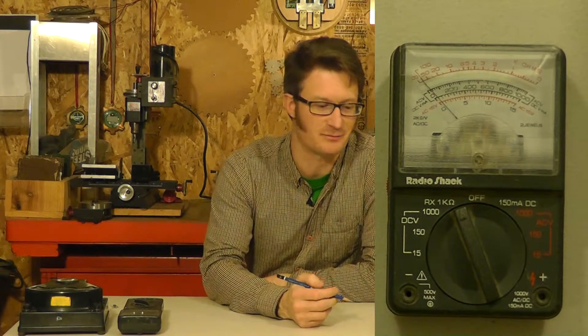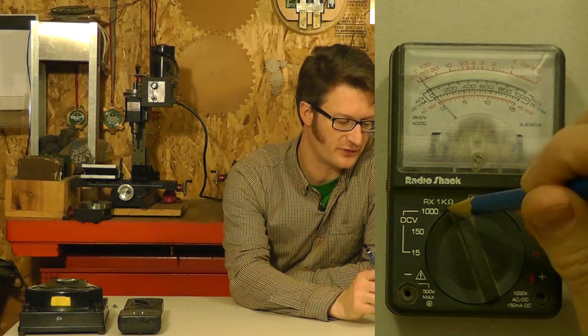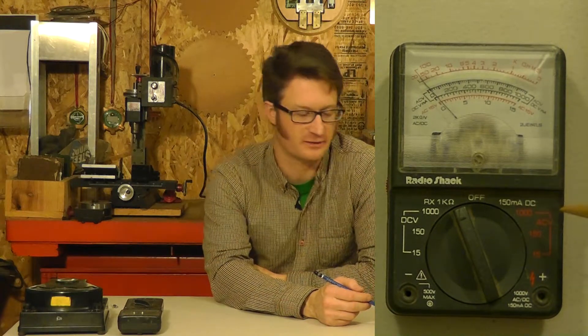A multimeter like this is called a manual ranging multimeter. What I mean by that is that you have to set the range, the full-scale range that it'll be able to display for different measurements. This one has three different ranges for DC volts of 0 to 15 volts, 0 to 150 volts, and 0 to 1,000 volts. This one can also measure resistance up to 100 kilo ohms. It can measure up to 150 milliamps of DC current, and it can measure up to 1,000 volts of AC voltage.